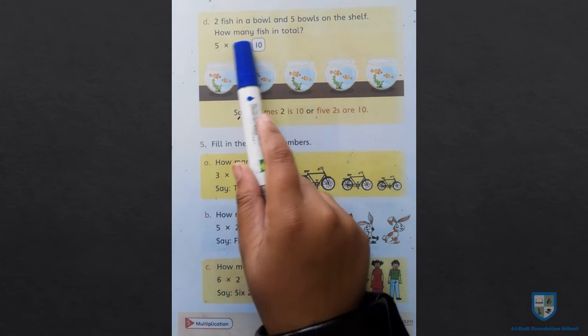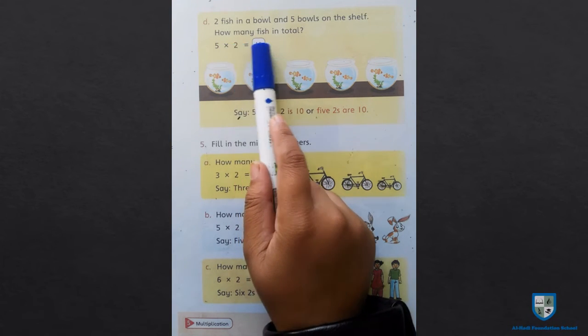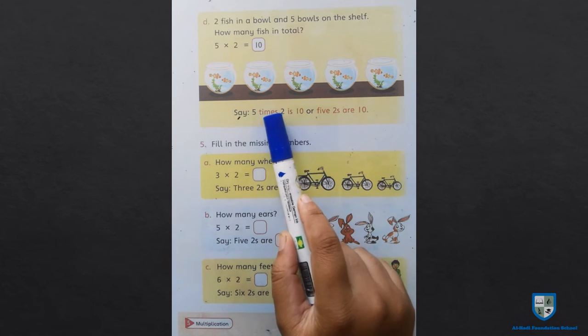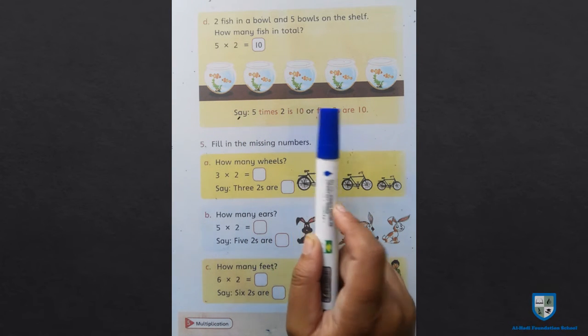How many fish in our total? 5 multiplied by 2 is equal to 10. Say 5 times 2 is 10, or 5 twos are 10.